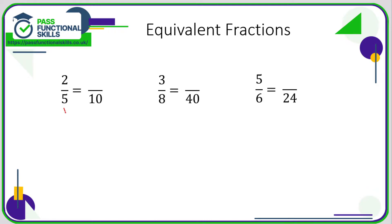What do you do to turn a five into a ten? You double it — you multiply it by two. So for an equivalent fraction, we need to do the same to the top as well. We need to double that as well, giving four tenths. Two fifths is the same as four tenths.